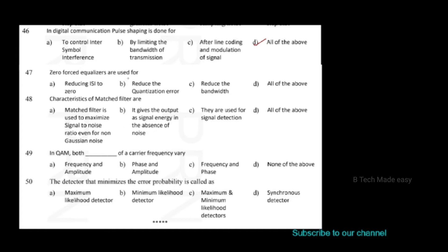Zero-forced equalizers are used for: Option A: reducing ISI to zero. Option B: reducing quantization error. Option C: reducing the bandwidth. Option D: all of the above. Zero-forced equalizers are used for reducing ISI to zero, so option A is the correct answer.